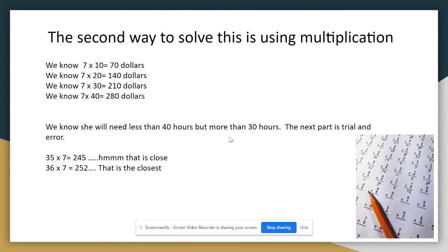Here's the second way you could use this. I kind of know already. I know 7 times 10 is $70 and that's not enough. You also know 7 times 20 is $140, and you know that's not enough. We know 7 times 30 is $210, and we know that's not enough. Then we know 7 times 40 is $280, and that's too much. So we know she's going to need less than 40 hours but more than 35.